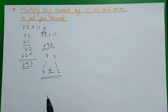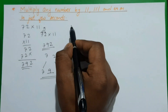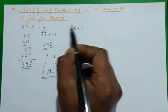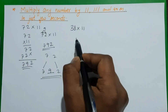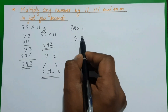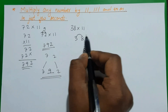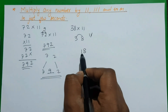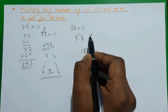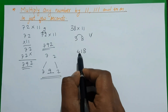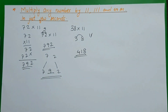Let's multiply another number: 38 × 11 using the short method. We write 8 first. Then 3 plus 8 is 11 — we write 1 and carry over 1. So 1 plus 3 is 4. Our answer is 418.